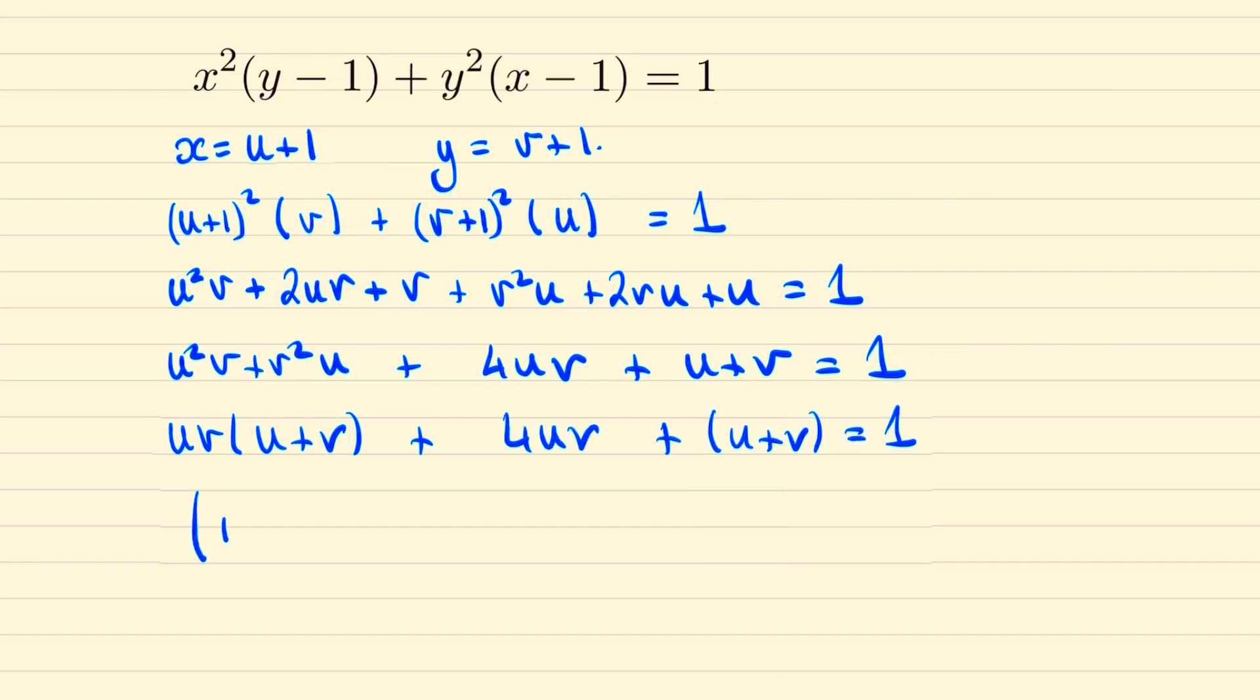So in one bracket we'll have u v, in the other bracket we'll have u plus v. Then the first one we'll need to add one and then the second one we'll need to add four. This gives us all three terms above but then we also have a plus four added on so we'll minus that as well. And so now what we've shown is that the product of these two brackets must equal five.